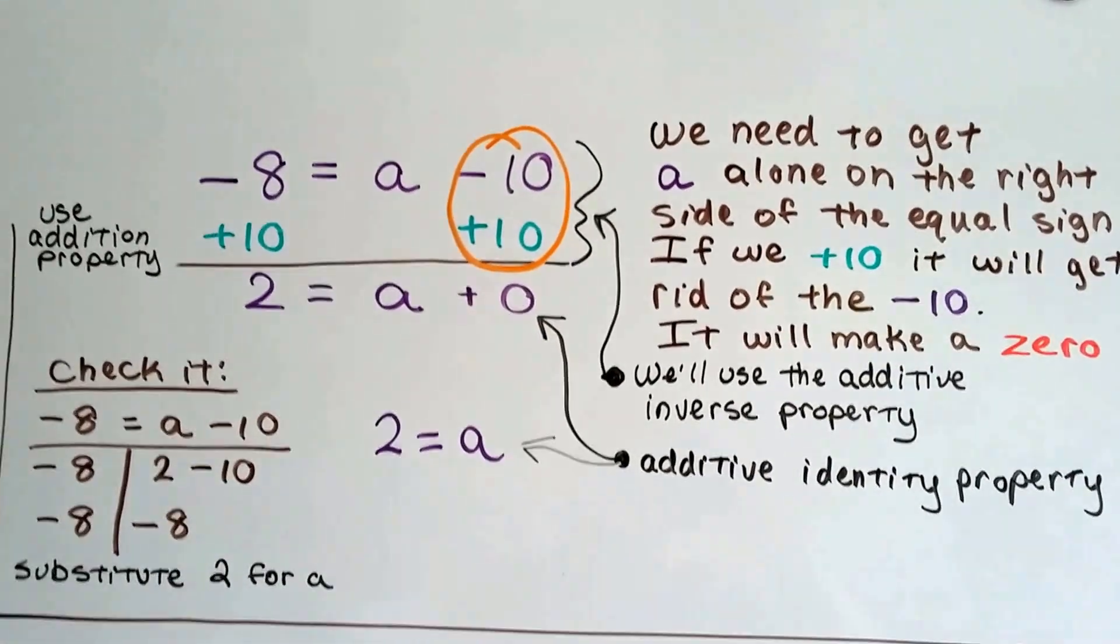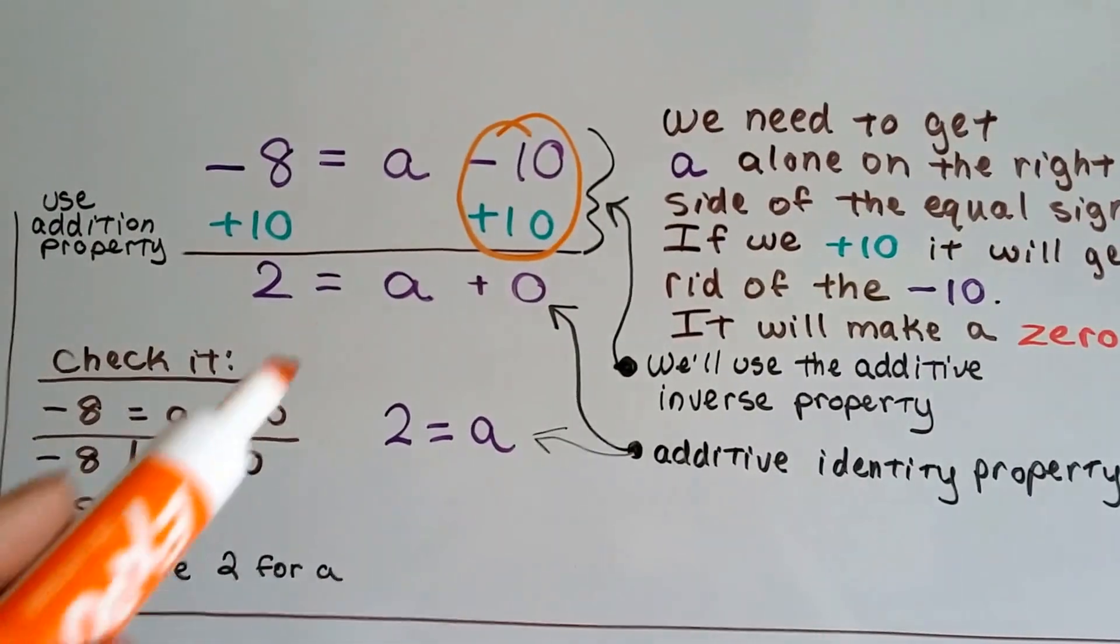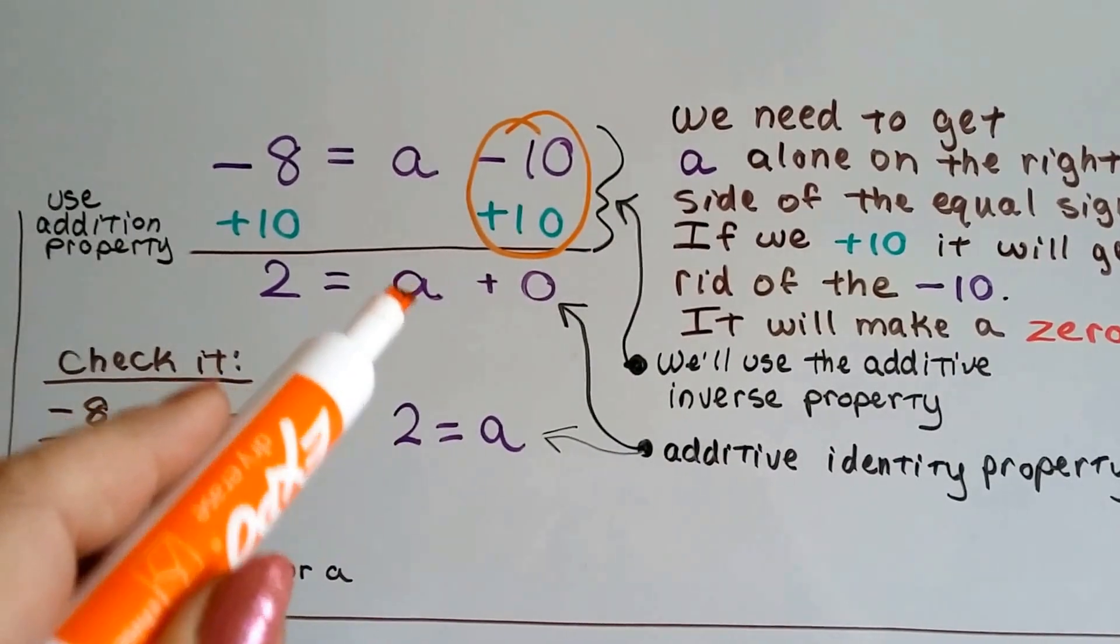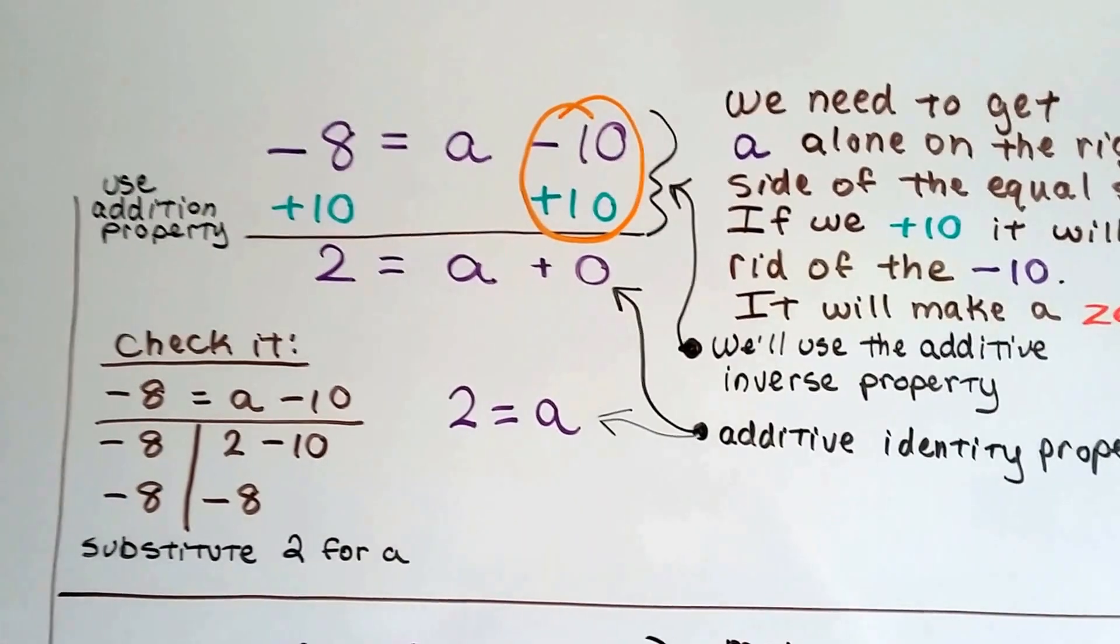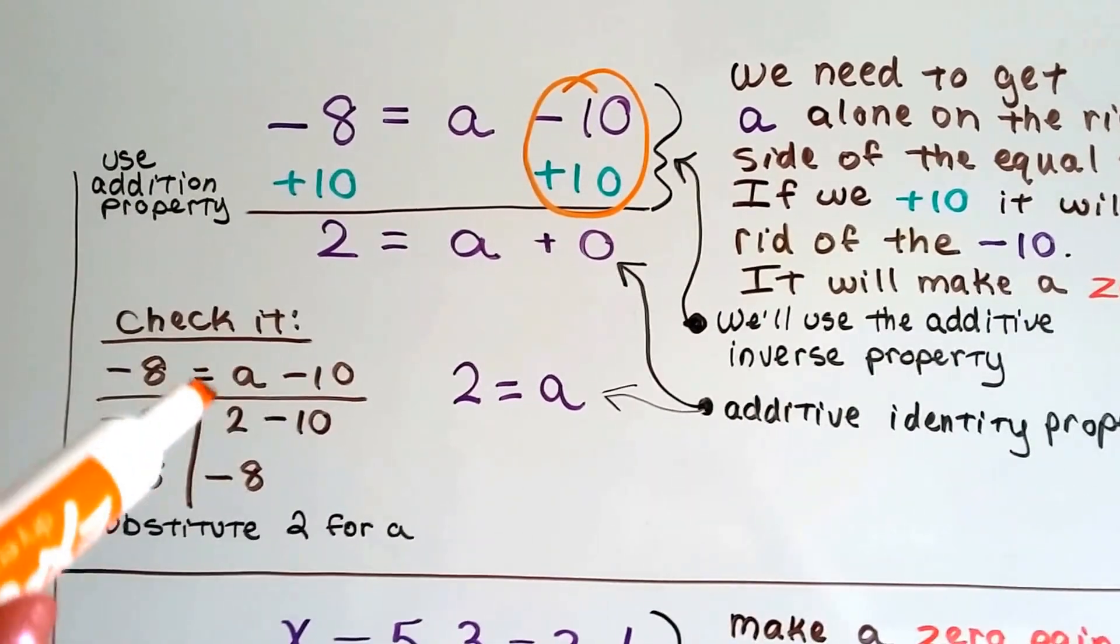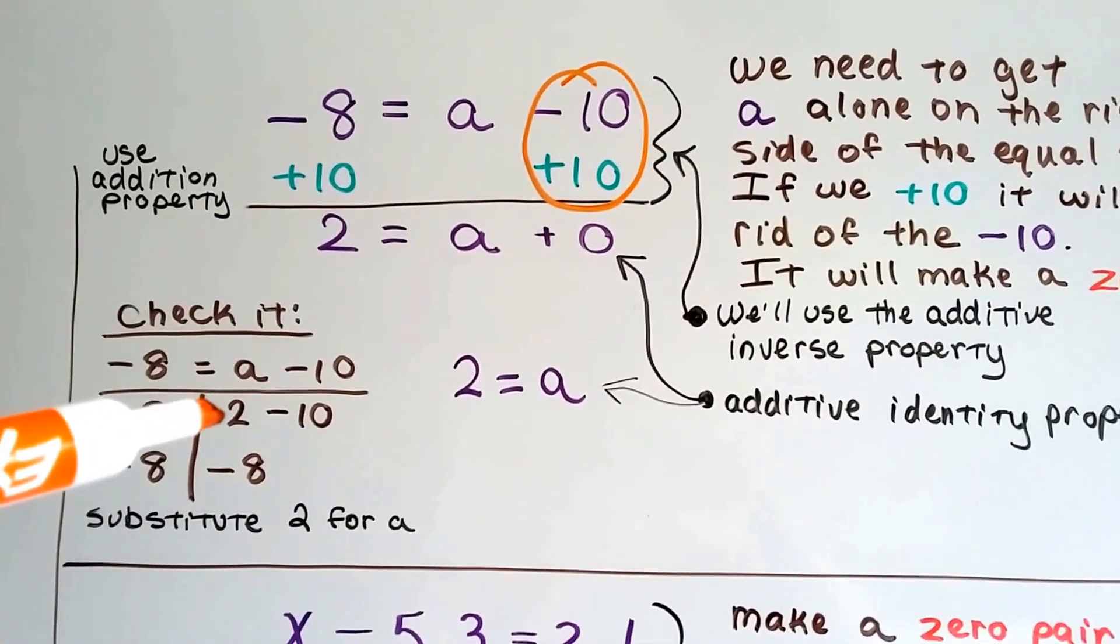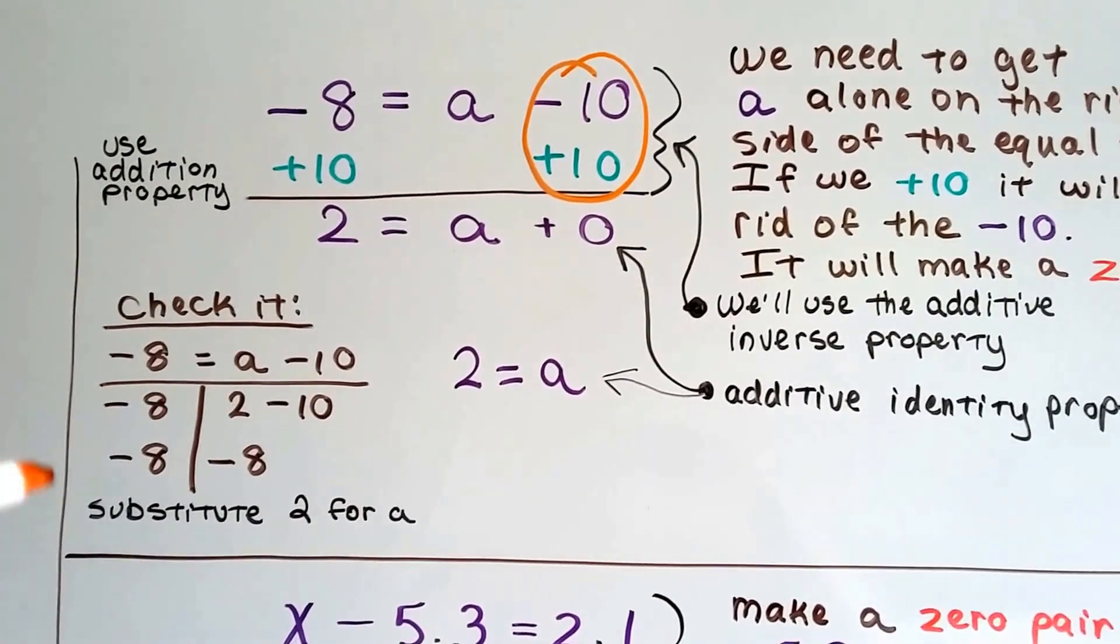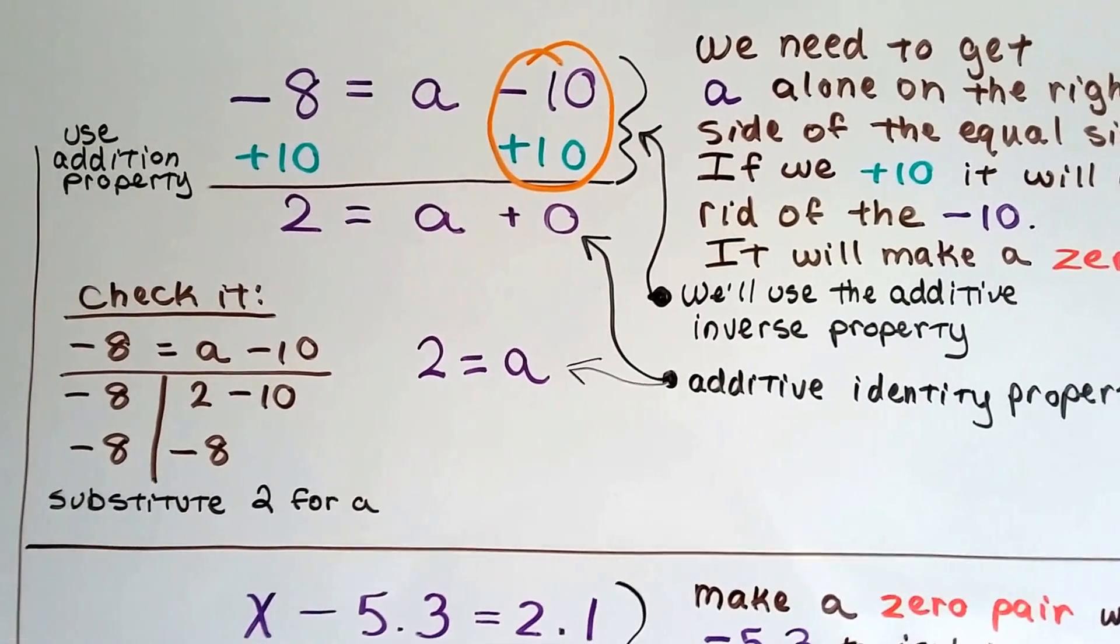And the additive identity property says a plus zero stays as a. So we've got 2 equals a. And we check it. We write our equation, negative 8 equals a minus 10. We plug, substitute the 2 in for the a, and we see that it's negative 8 on both sides. So we know we did it correctly.